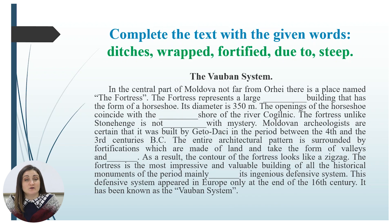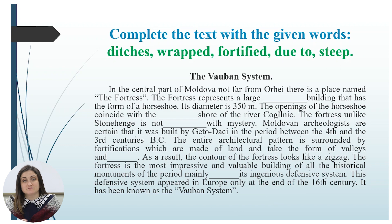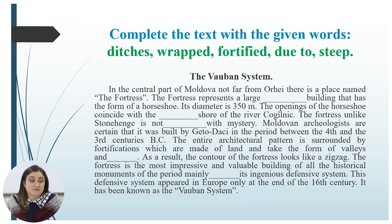This is about the Vauban system. The task is the same — complete the text with the given words: 'ditches,' 'wrapped,' 'fortified,' 'due to,' and 'steep.' If you are ready to listen, take your pen or pencil, and let's go!